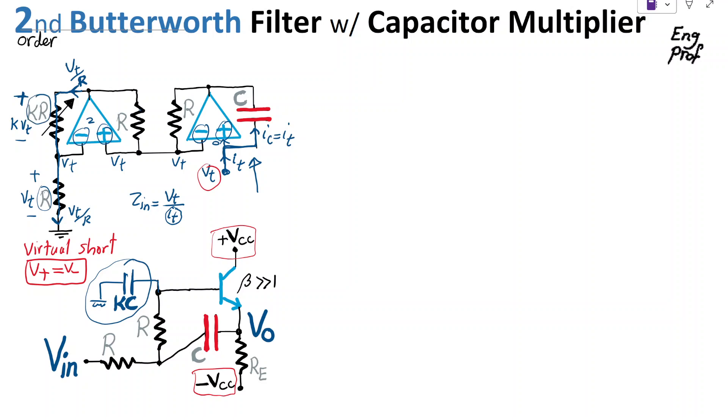That current flowing through KR, which is K times R, already caused VT across R, so it obviously generates KVT voltage drop across KR because it has K times the resistor. Now, this KR is in parallel with this R because on one side they both have VT. On the other side, they have a common node. So this KVT should also be here.